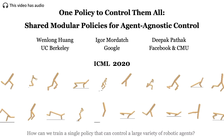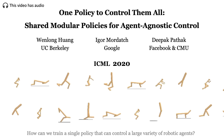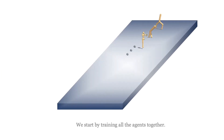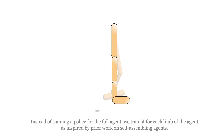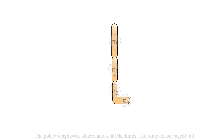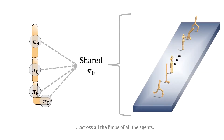How can we train a single policy that can control a large variety of robotic agents? We start by training all the agents together. Instead of training a policy for the full agent, we train it for each limb of the agent, as inspired by prior work on self-assembling agents. The policy weights are shared across all the limbs, not only for one agent, but across all the limbs of all the agents.